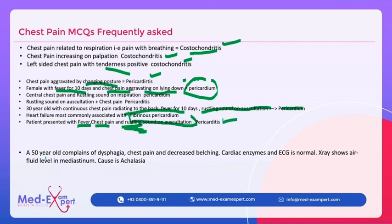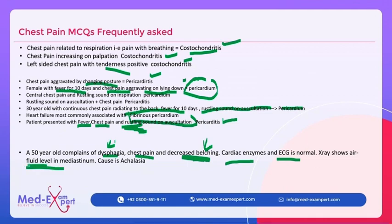A 50-year-old with complaints of dysphagia, chest pain, and decreased belching — dysphagia and belching are very important changes here. Cardiac enzymes and ECG are normal. X-ray shows air-fluid level in the mediastinum — this is achalasia.